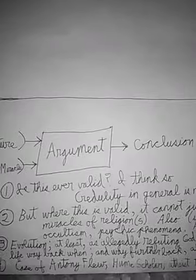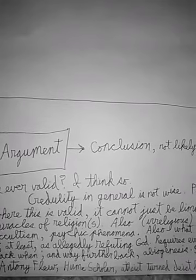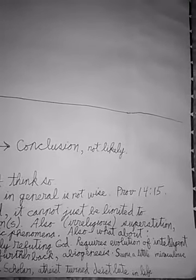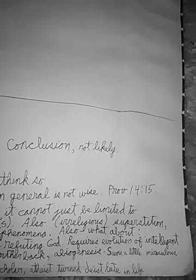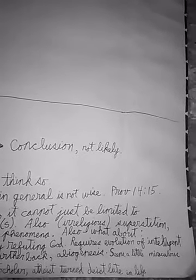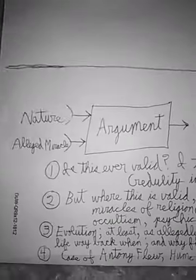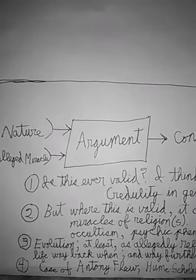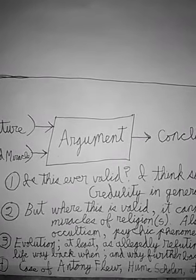At least evolution as a comprehensive theory that is supposed to be refuting God or the God hypothesis. Now you see belief in evolution in that sense requires some belief in things that are not according to the current observable course of nature. It requires evolution of intelligent life way back when where it didn't exist before. Not something we see happening with unintelligent species today.